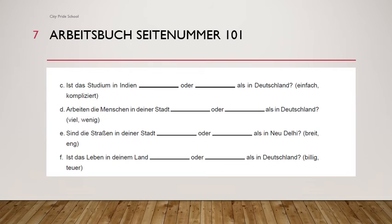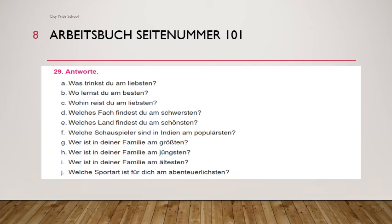Now we will do the next exercise. On the same Arbeitsbuch, Seite 101, neunundwanzig. They have given questions and you are supposed to write the answers. All questions are in superlative, so you have to keep the answer in superlative too. For example, A: Was trinkst du am liebsten? Ich trinke Limonade am liebsten. Or you can say: Ich trinke Cola am liebsten.